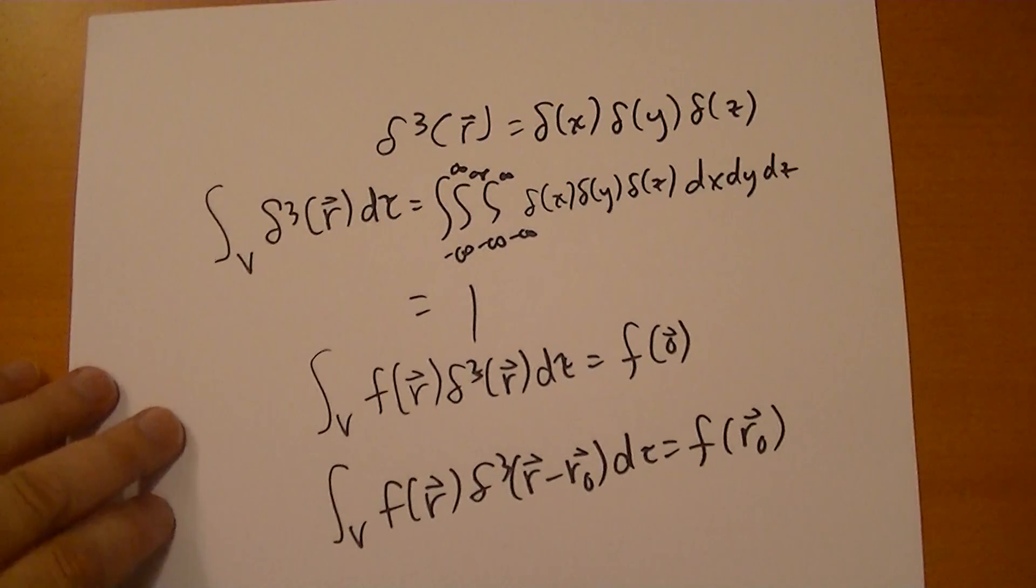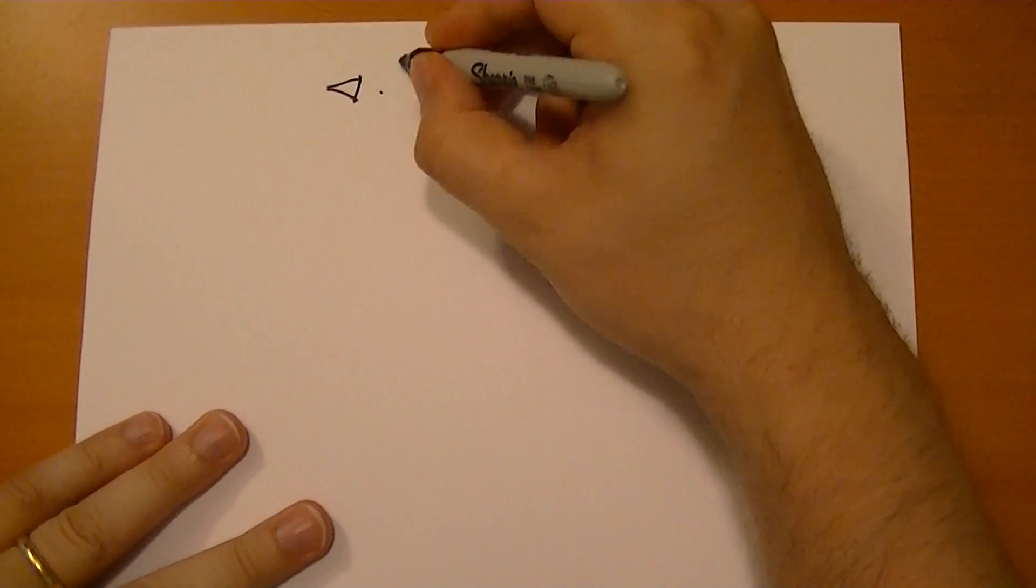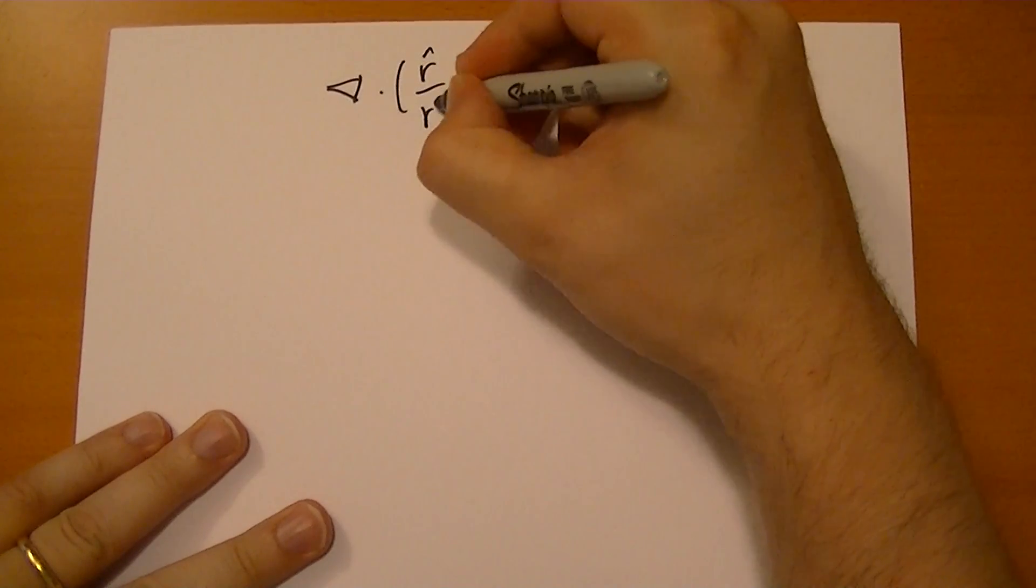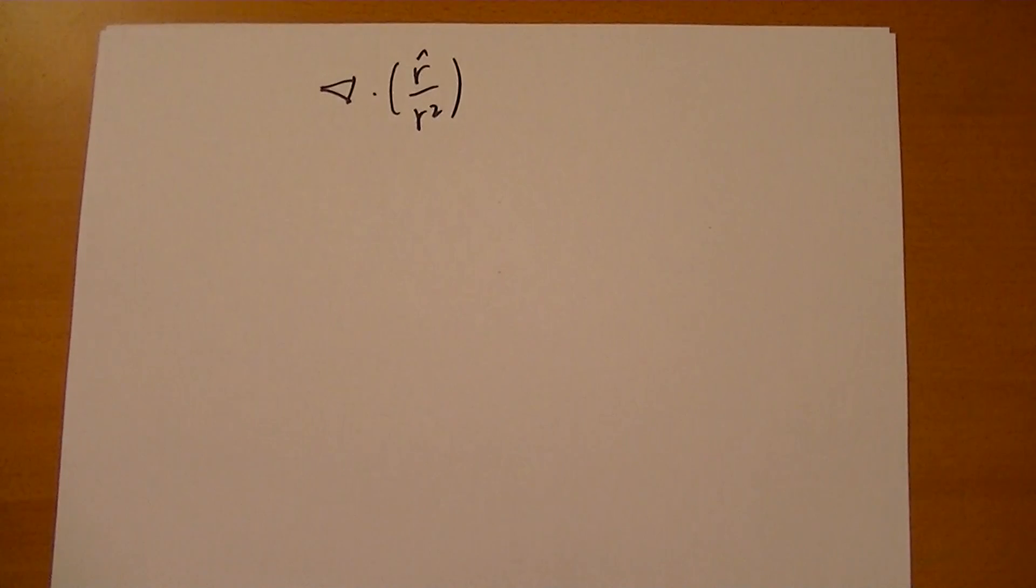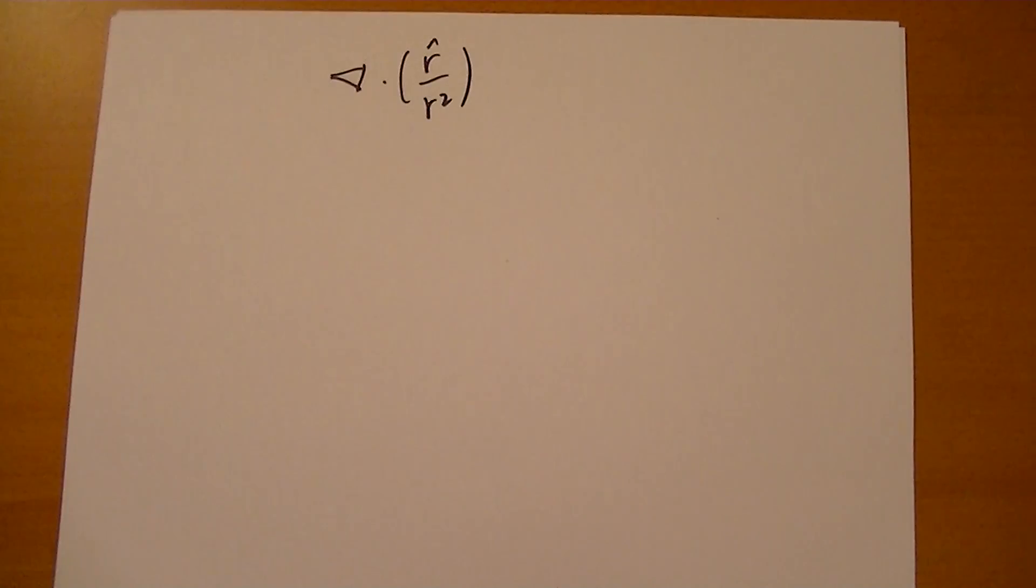So going back to our original example that kind of spurred this whole discussion along, we wanted to figure out the divergence of r̂/r². And the interesting thing is that this vector field is 0 everywhere except at the origin. Or the divergence is 0 everywhere except at the origin.